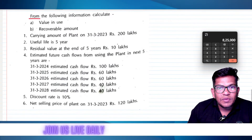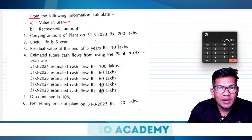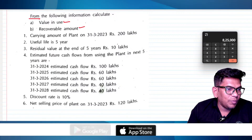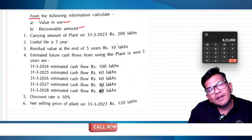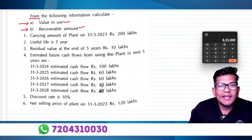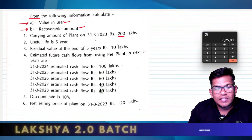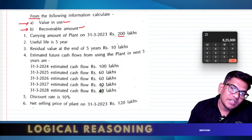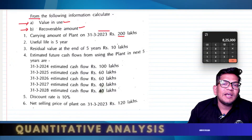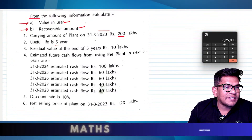From the following information, calculate the value of the asset's recoverable amount. The carrying amount of the plant is 200 lakh as at 31st March 2023. The useful life is 5 years.